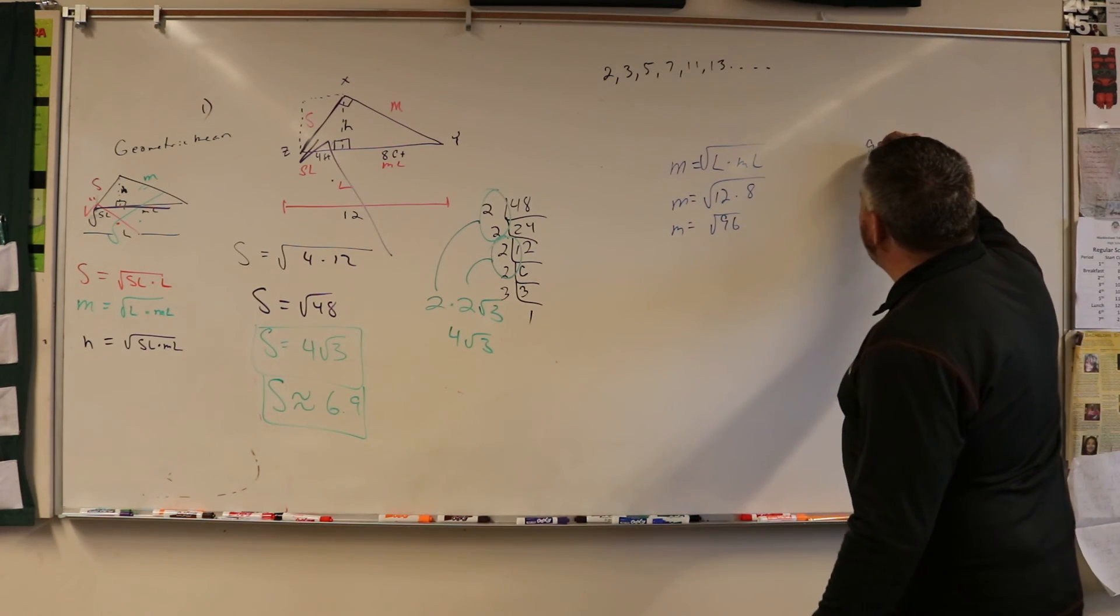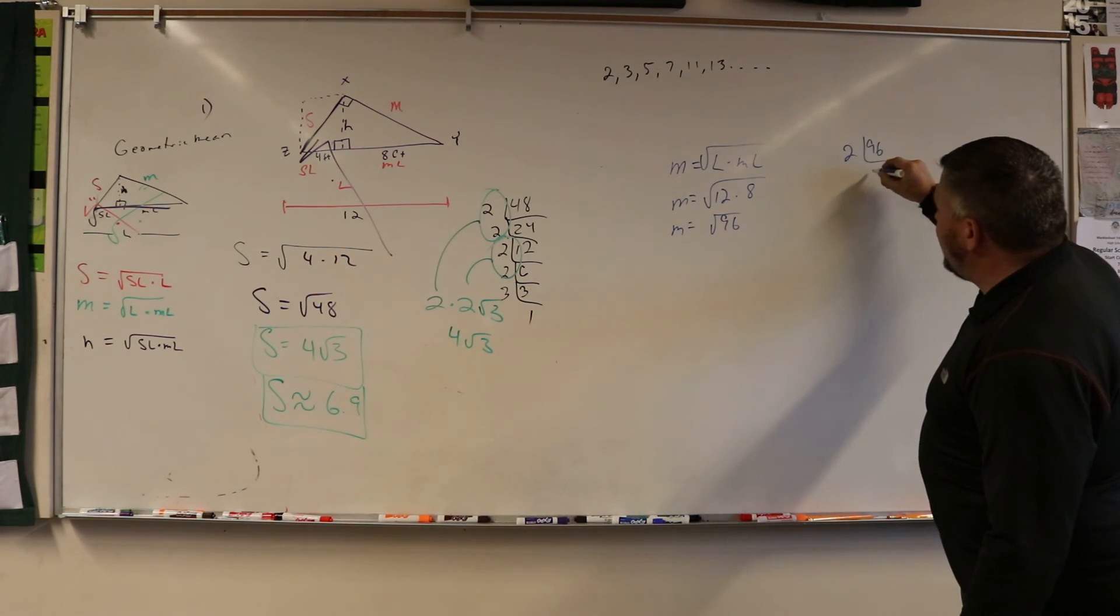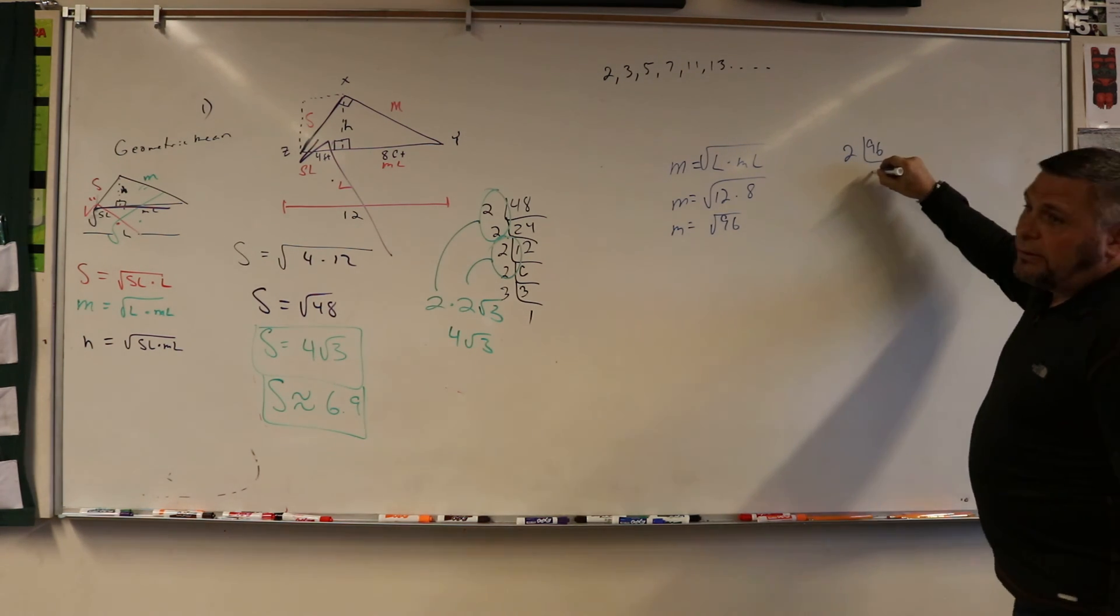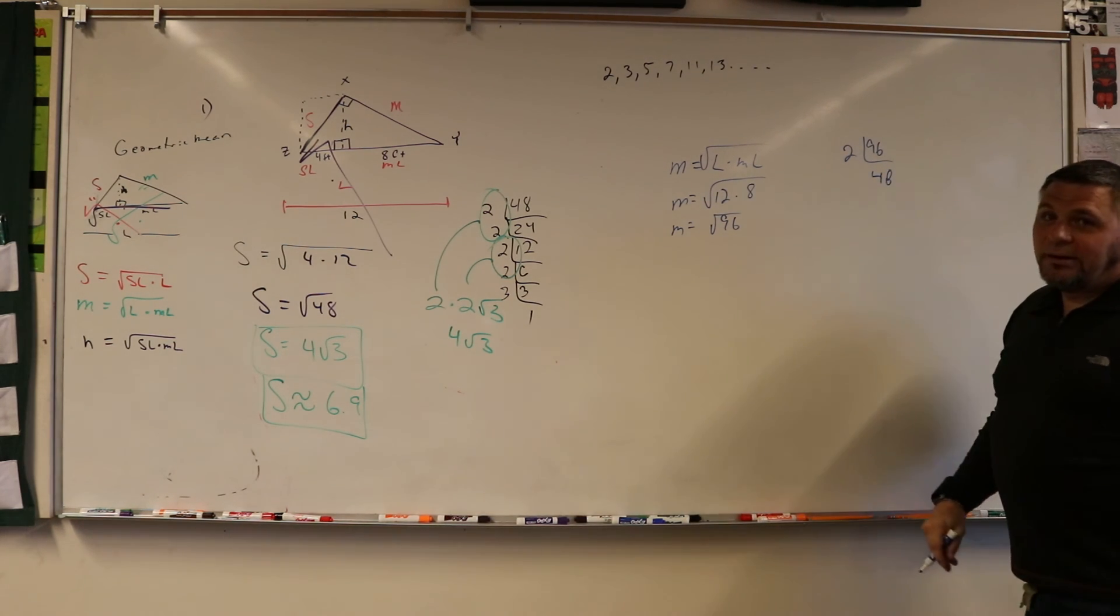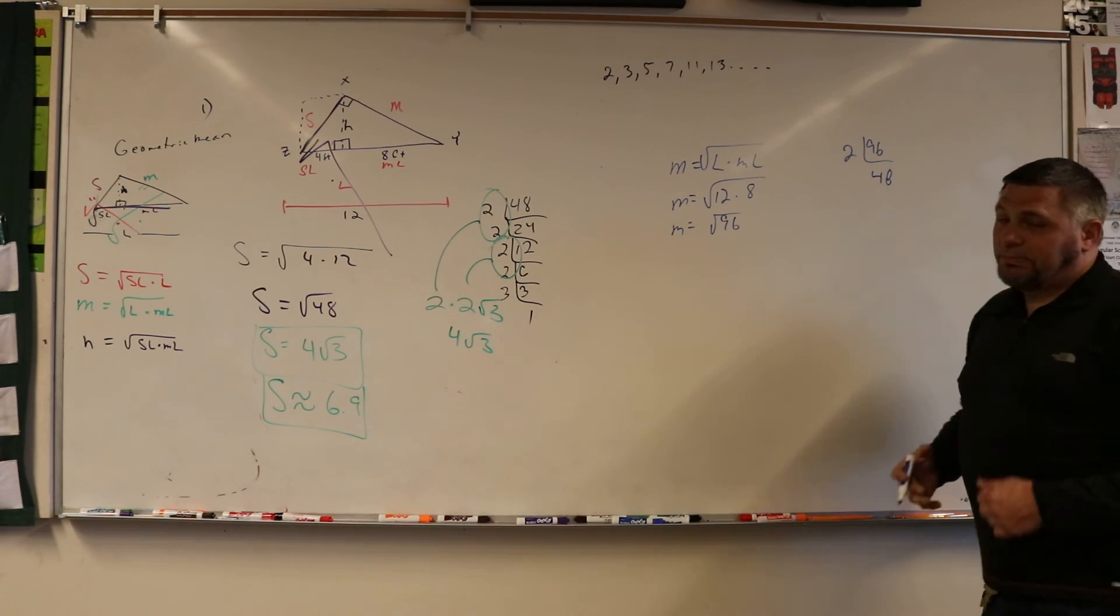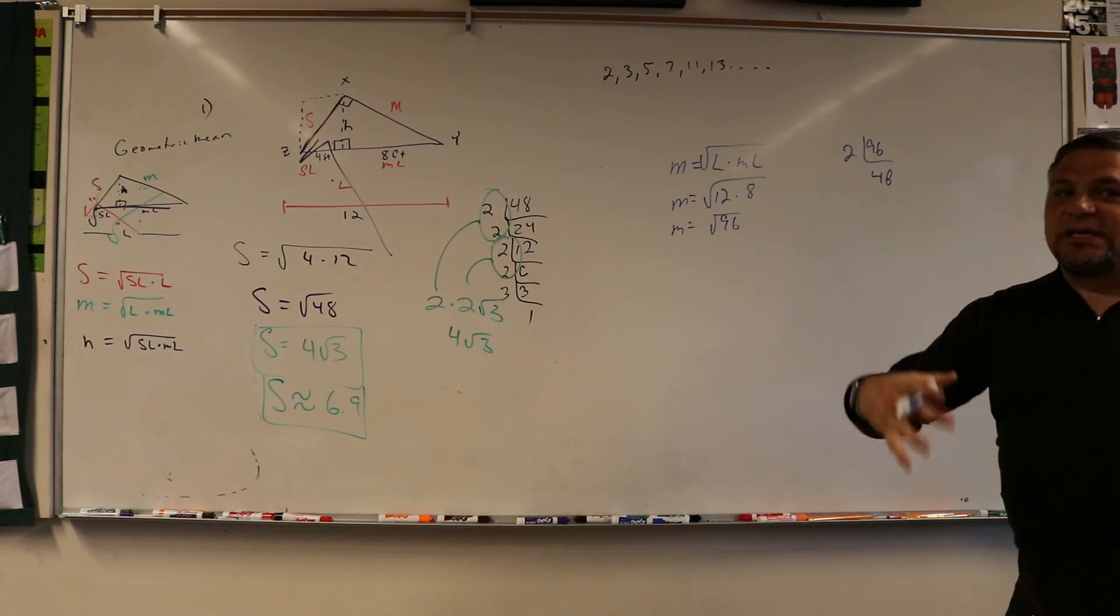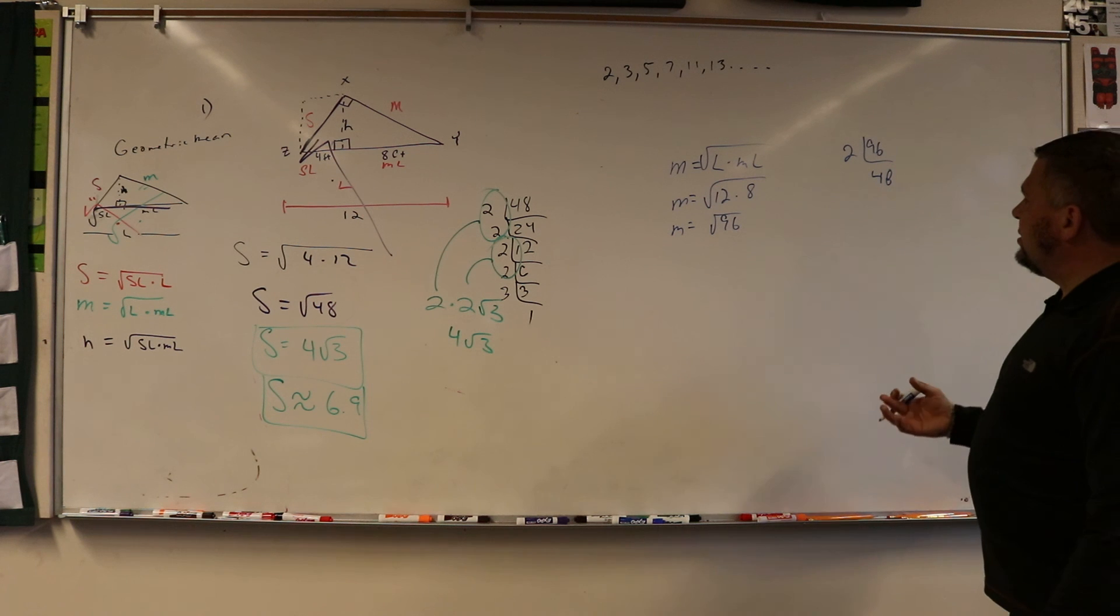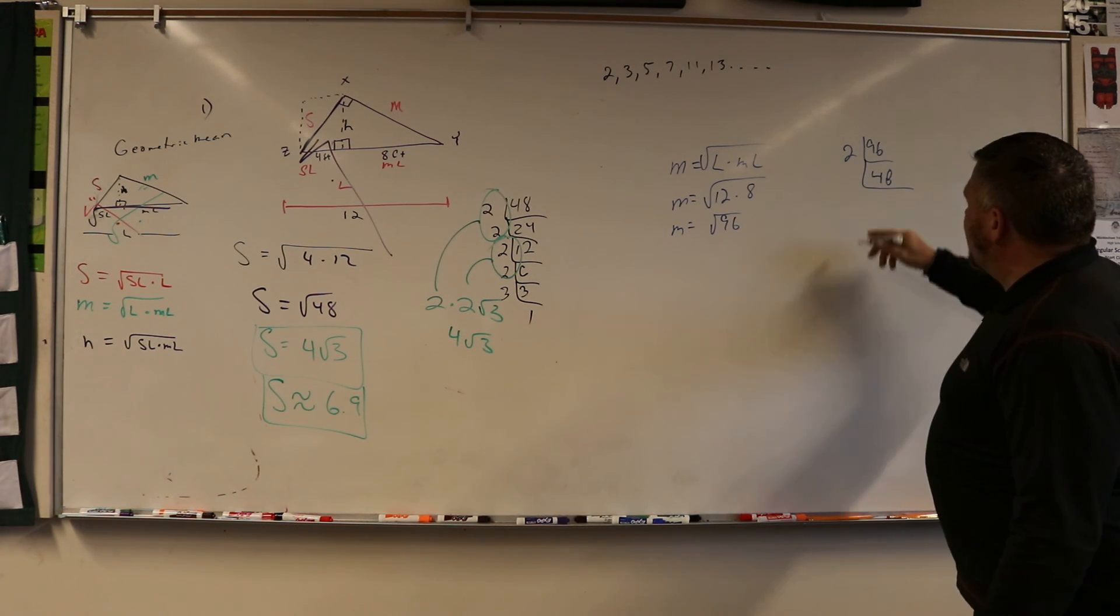96, break it down. So 2 is 48, right? It better be, multiplied by 2 to get there, so it just has an extra 2. Okay, so 2 and then that's going to be 2.